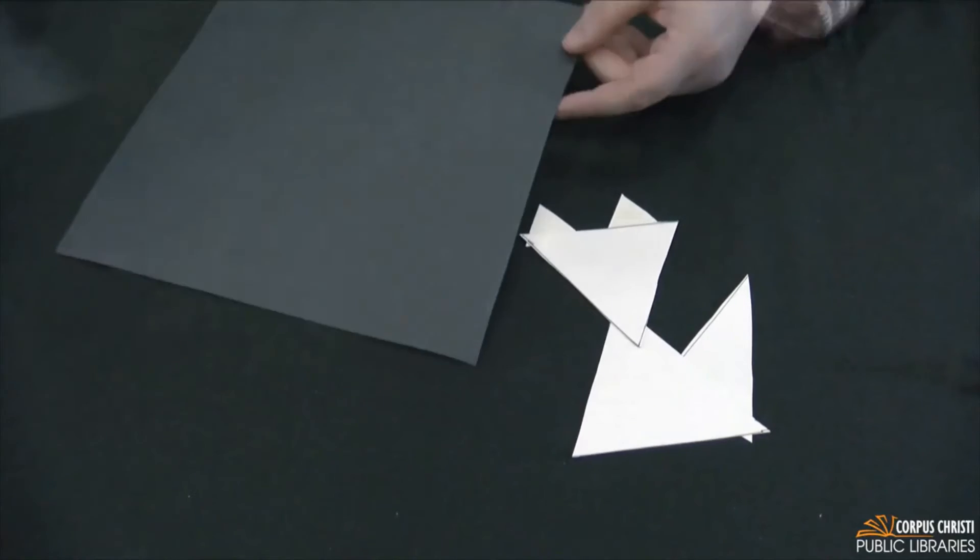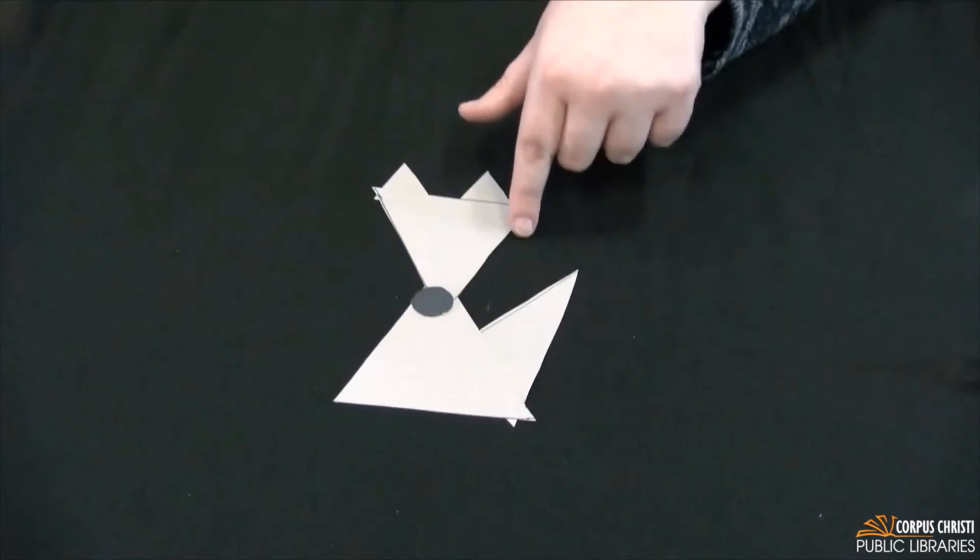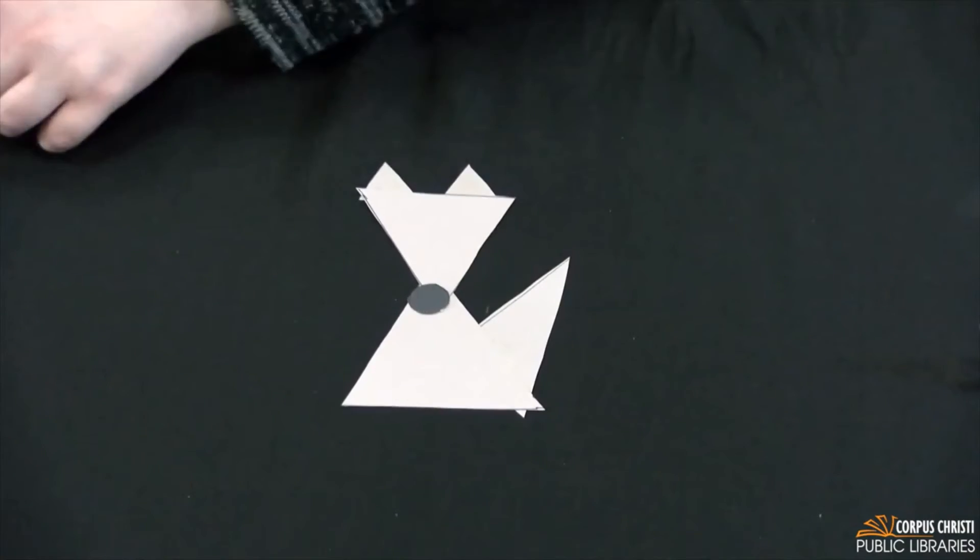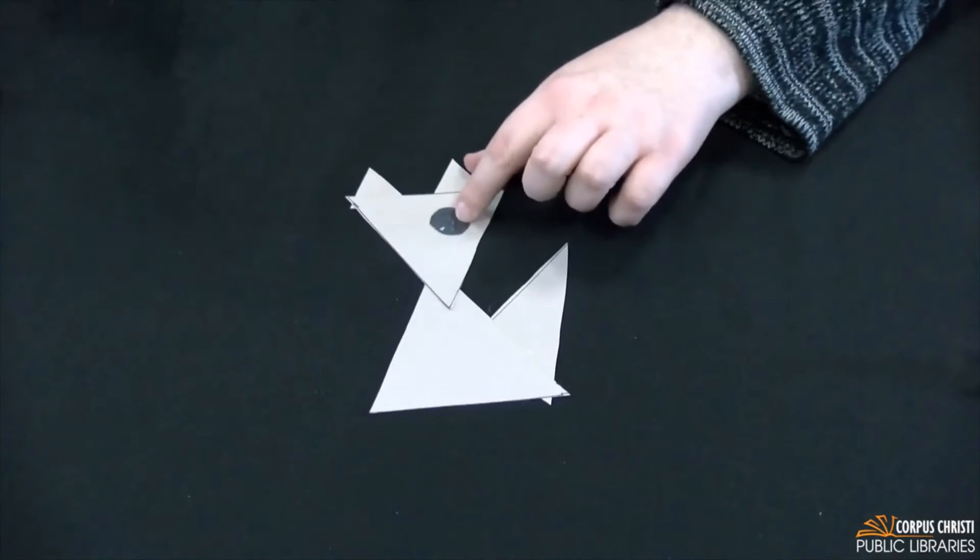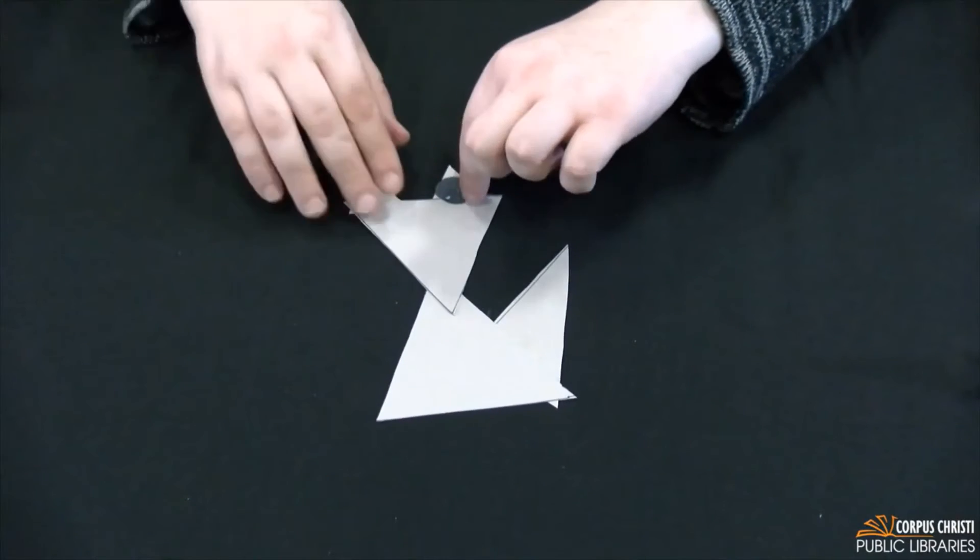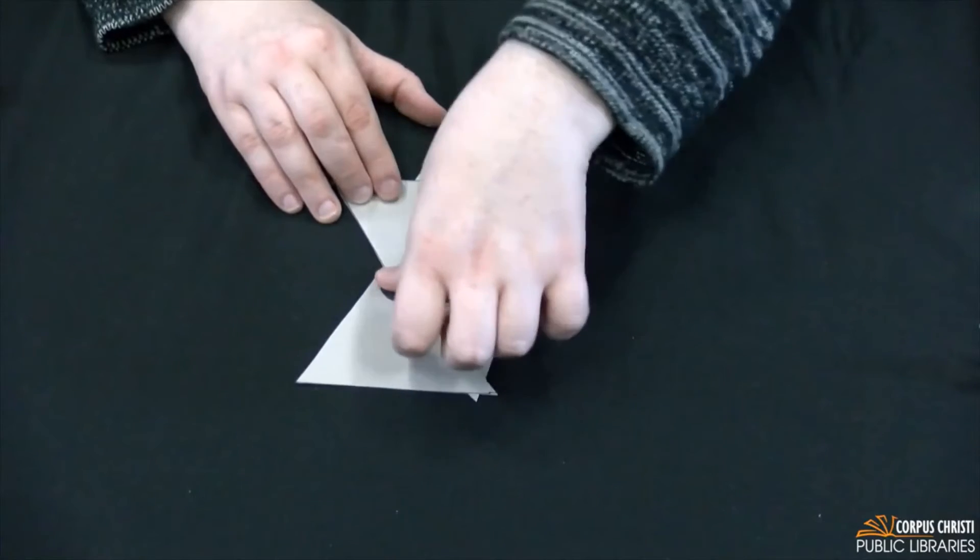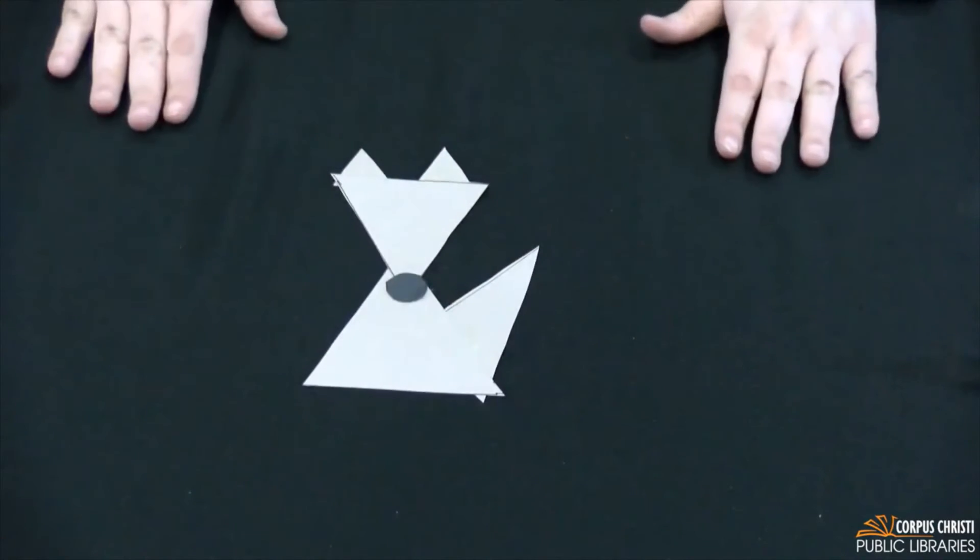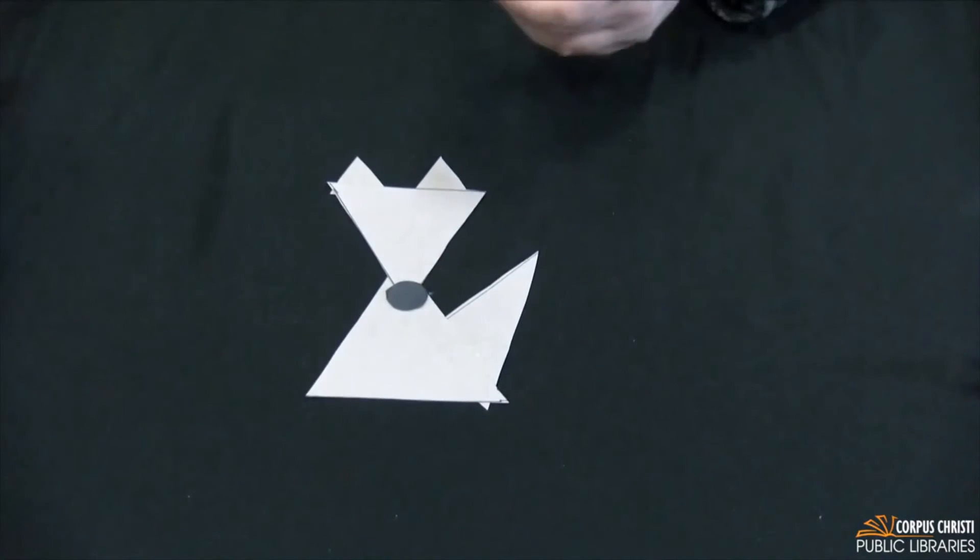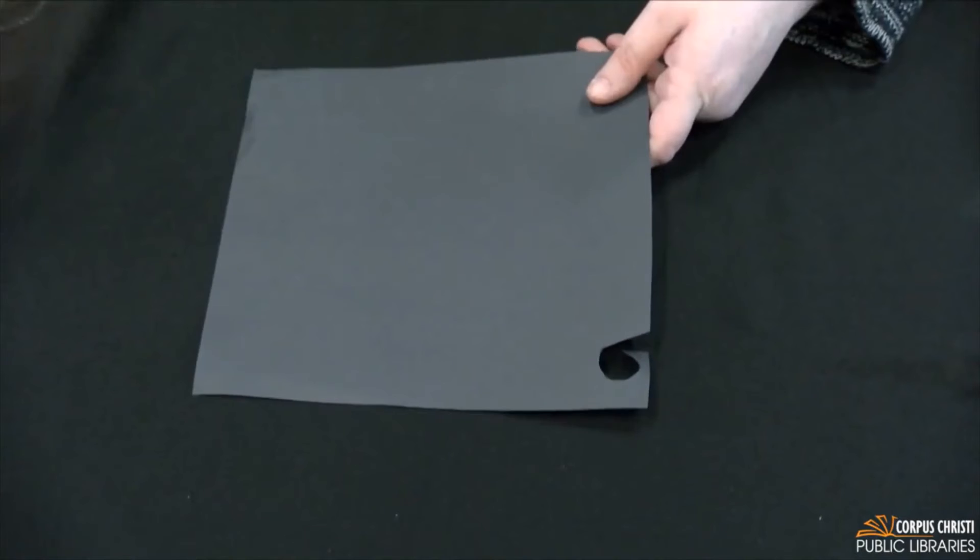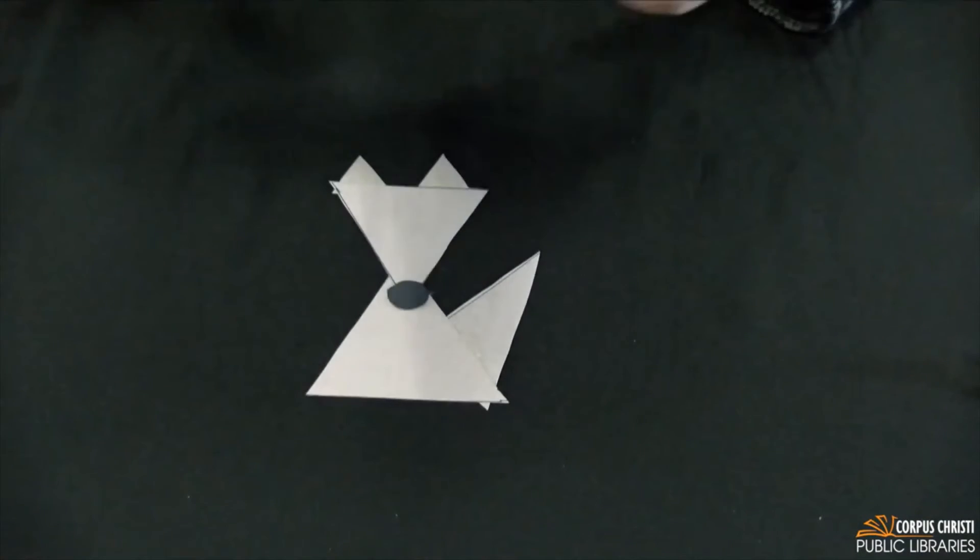I'm going to go ahead and cut out my circle and glue that down to be my nose. And the other shapes I'm going to need now are mostly rectangles. So I don't really need to measure these out. What I'm going to do is just cut out some strips on my black paper here.